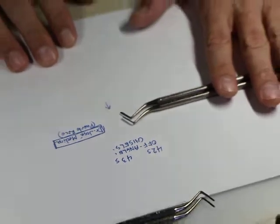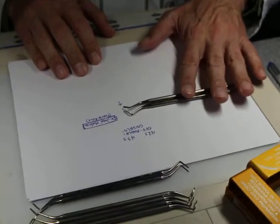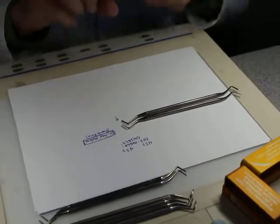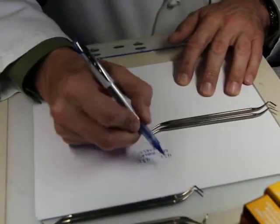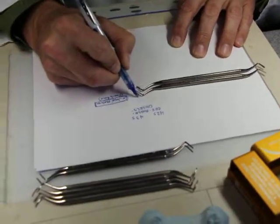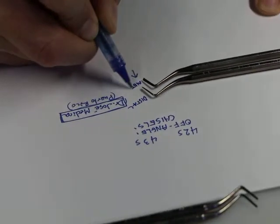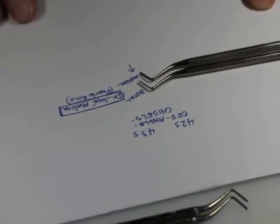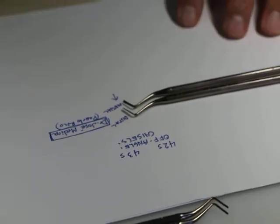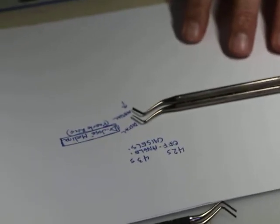Now, these off-angle chisels, the 42S and the 43S, are used for different boxes. The 42S is used for the distal, and the 43 is used for the mesial. And you can kind of remember because, I mean, there's a couple of ways to do this.